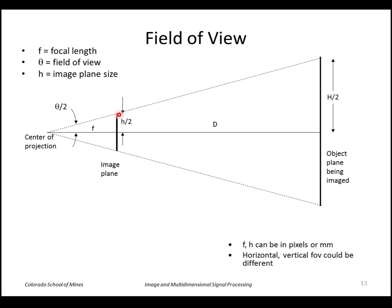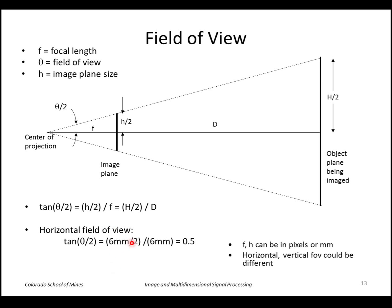From this information we can estimate the field of view of the camera. We know the focal length is 6 millimeters and the dimensions of the image plane. Using the equation arc tangent of (h/2) divided by f equals theta over 2, we can calculate the angle. For the horizontal field of view, the CCD chip dimension is 6 millimeters divided by 2, divided by the focal length of 6 millimeters — so arc tangent of 0.5 multiplied by 2 gives about 53 degrees. The vertical field of view differs because the CCD chip size in that dimension is different.